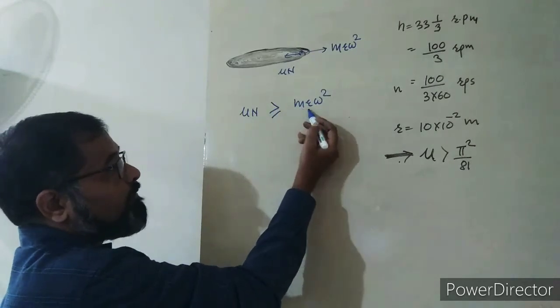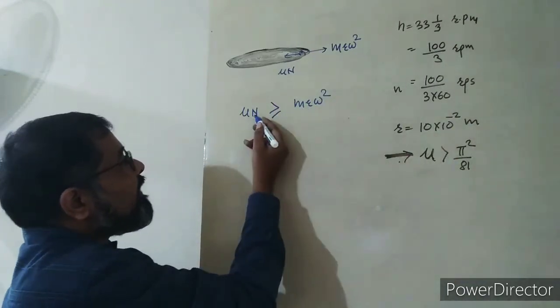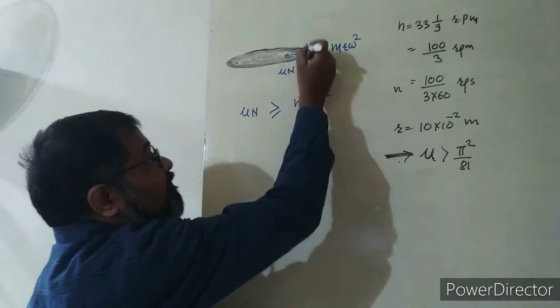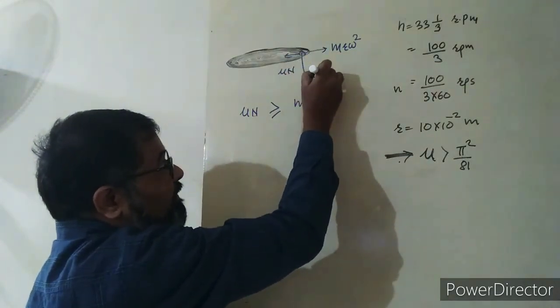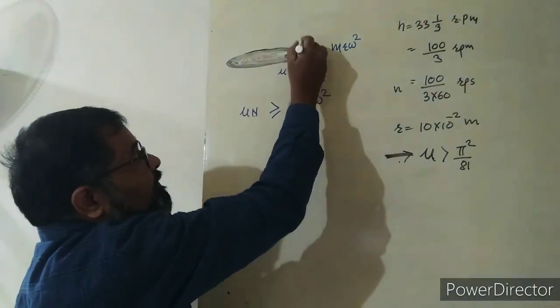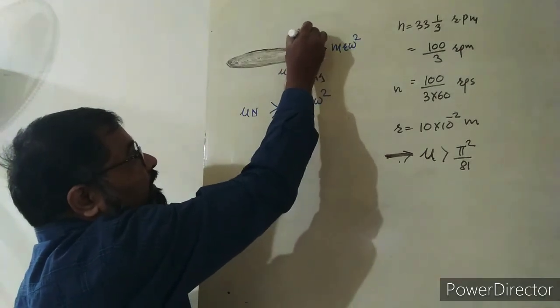μN ≥ mr ω². Here N is the normal reaction. When the mosquito is here, its weight is downward (mg), so the surface exerts an upward normal reaction N on the mosquito.